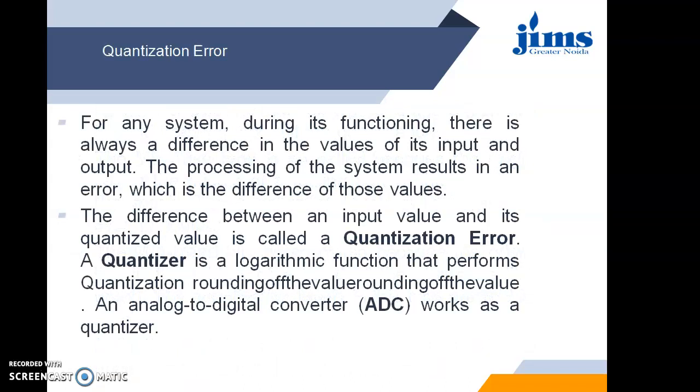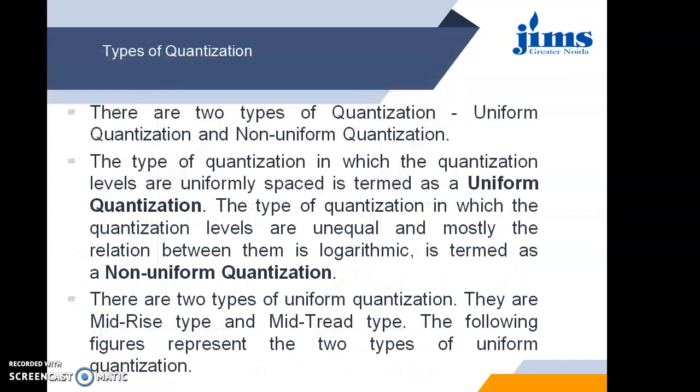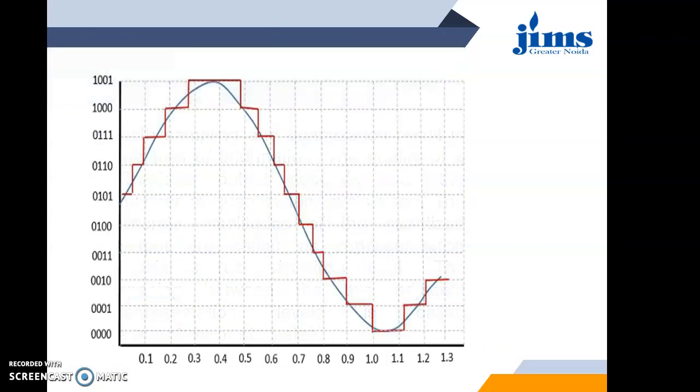For any system during its functioning there is always a difference in the values of its input and output. The processing of the system results in an error which is the difference of these values. We observe a kind of error in quantization process and this error is known as quantization error. This error is observed when the particular sample value is showing some different value and we have taken the quantization value at a particular quantization level only. That means the sample value may lie above or below the quantized level.